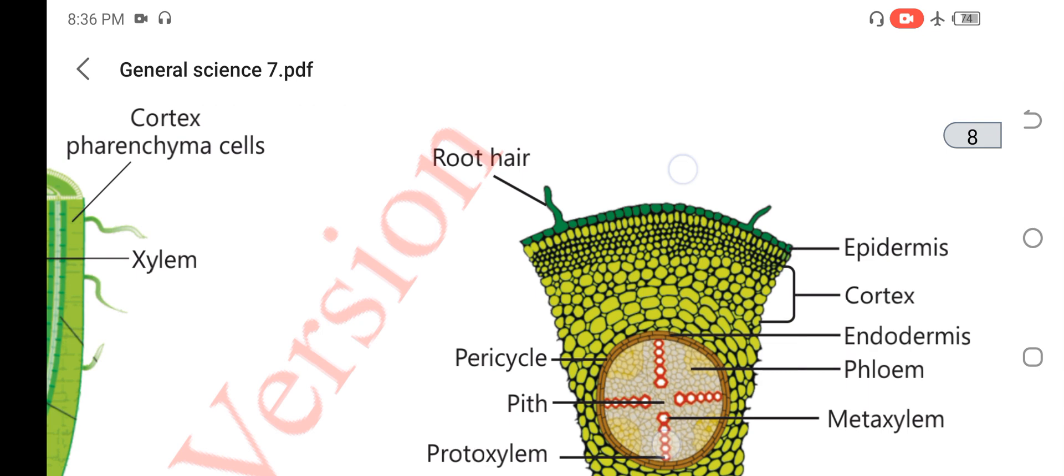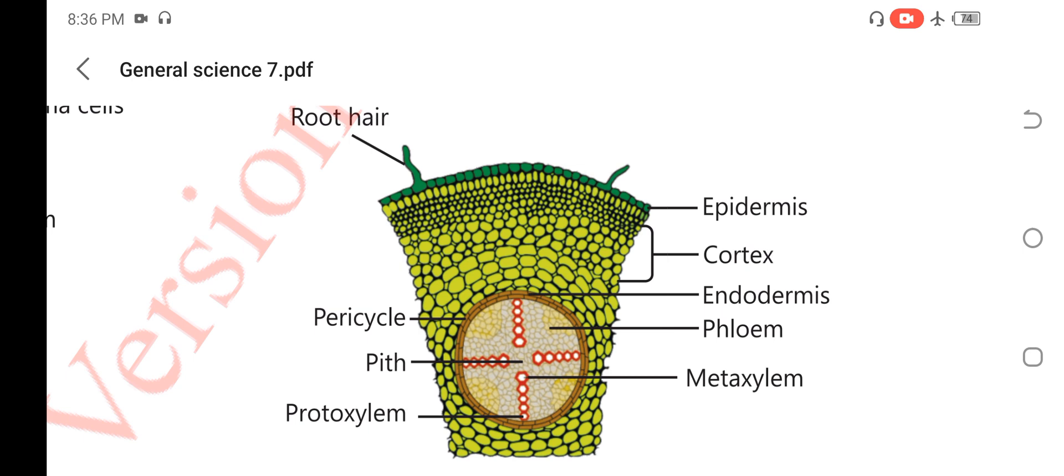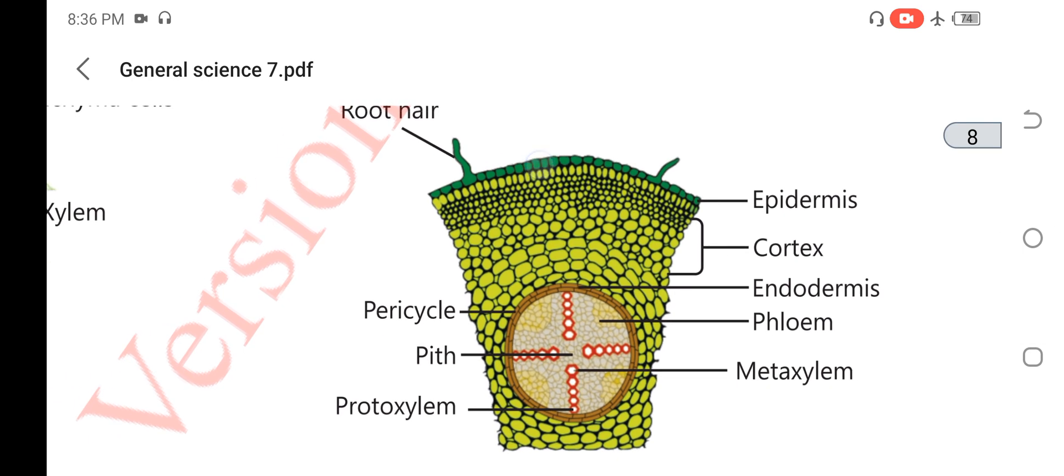This is the root here and this is the epidermis. This is the endodermis, and inside the endodermis is the pericycle. In the center you can see the xylem and phloem. This is the metaxylem and this is the protoxylem, and this is the phloem. Xylem has two parts: first one is metaxylem, then protoxylem.